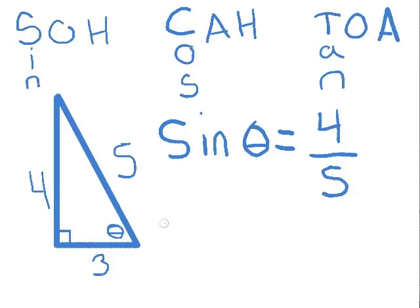And we'll follow the same pattern for cosine. Cosine of theta. Remember our memory device, cosine is CAH. Adjacent over hypotenuse. Adjacent means right next to, so we have a 3. Hypotenuse is 5, cosine is 3 over 5.